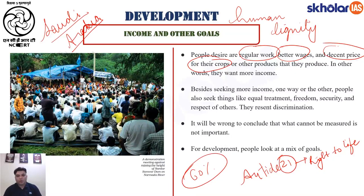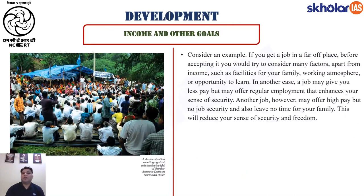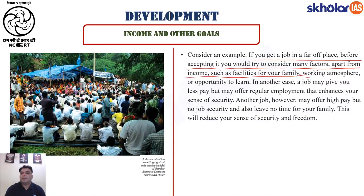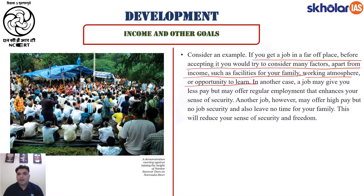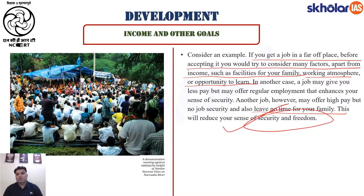The NCERT says it will be wrong to conclude that what cannot be measured is not important — freedom, liberty, equality are also important. For example, if you get a job in a far-off place, before accepting you would consider many factors apart from income such as facilities for your family and working atmosphere. A job may give less pay but offer regular employment that enhances your sense of security. Another job may offer high pay but no job security and leave no time for your family. So security and freedom are also equally important.